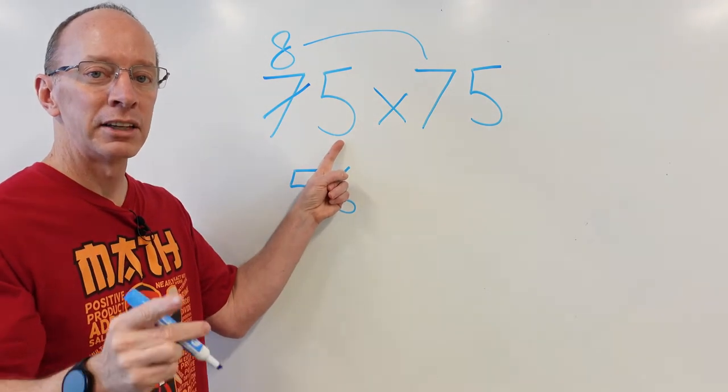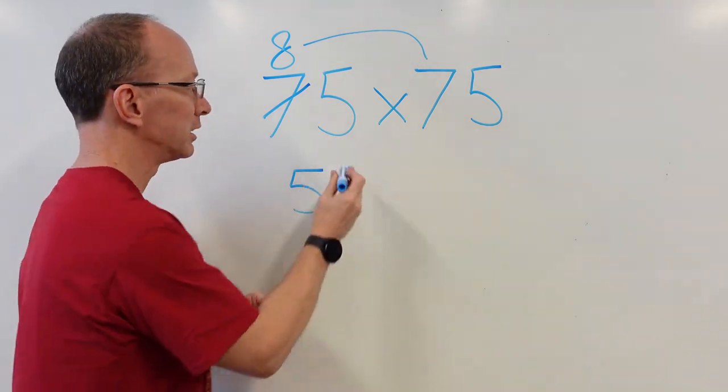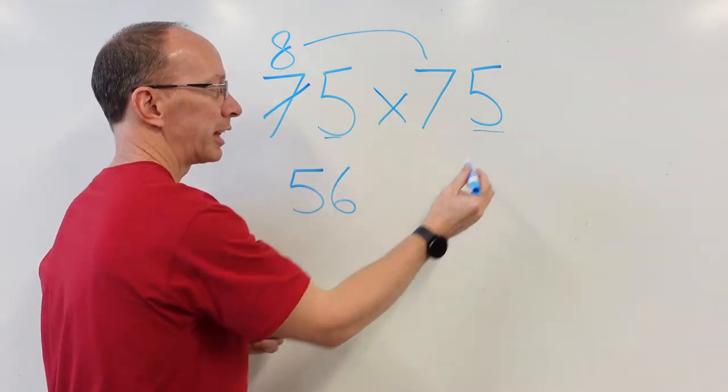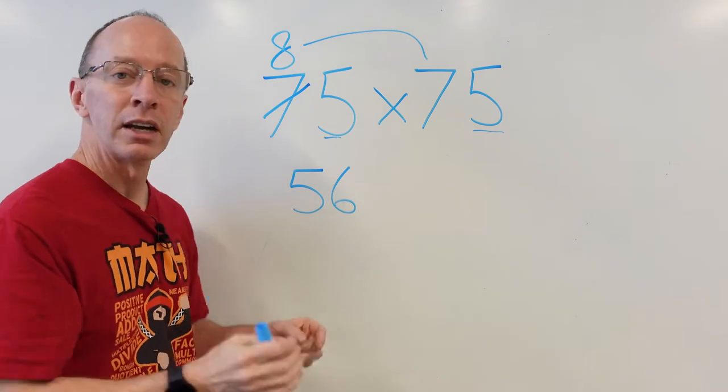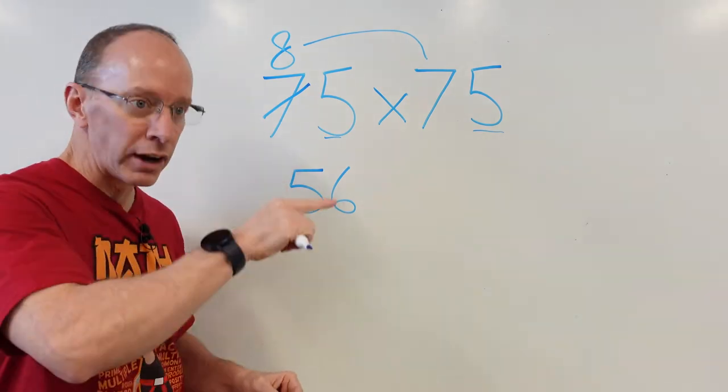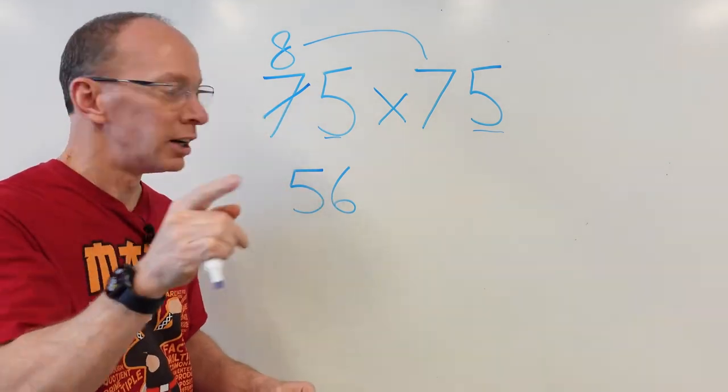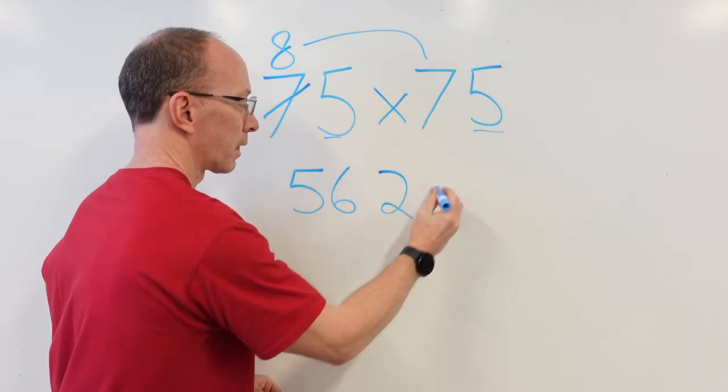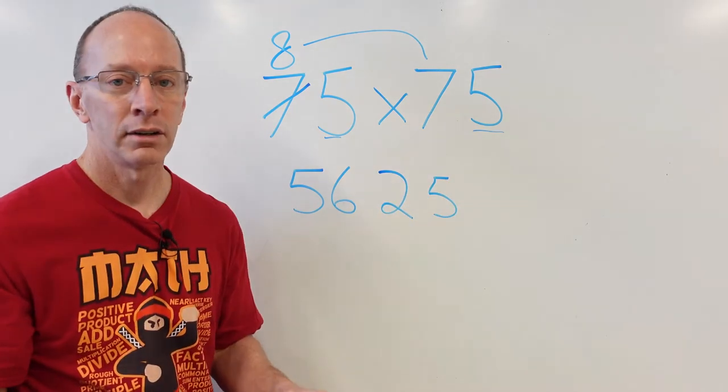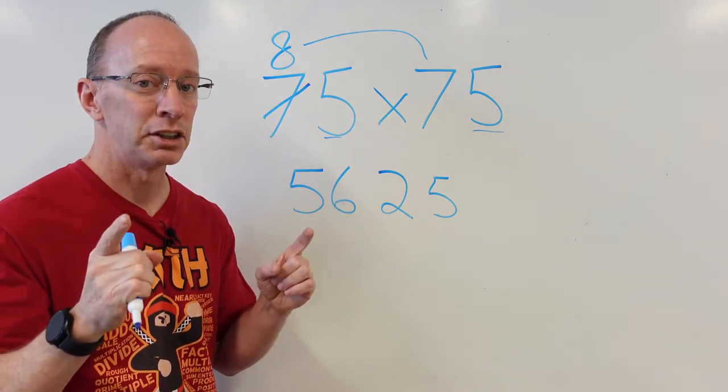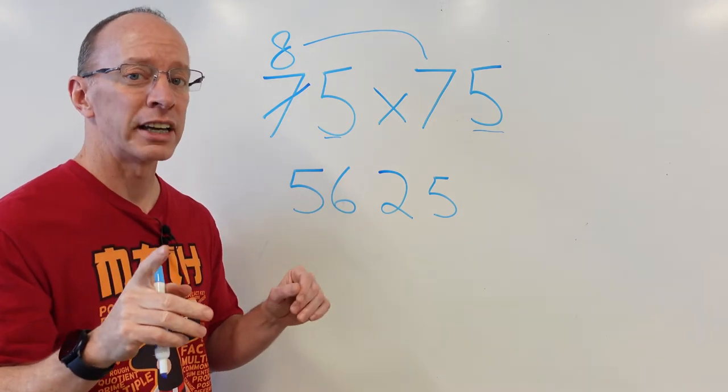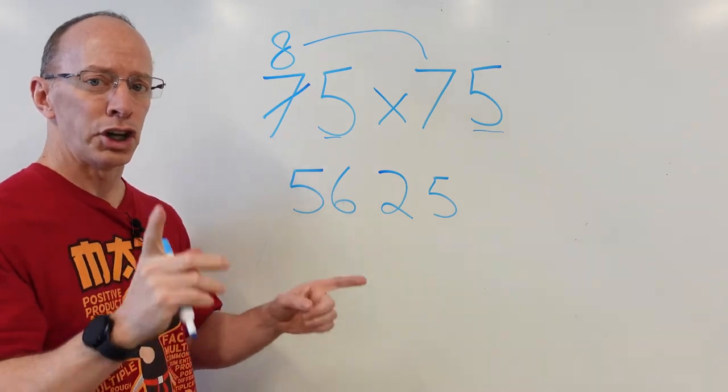Now, I multiply the numbers in the ones place. I multiply this one times that one. Five times five. Five times five is twenty-five. Twenty-five.